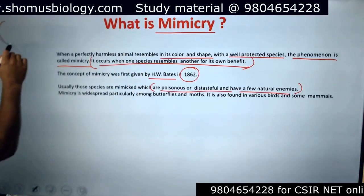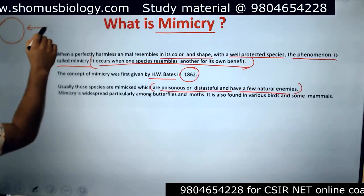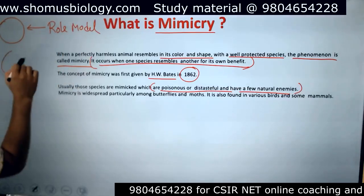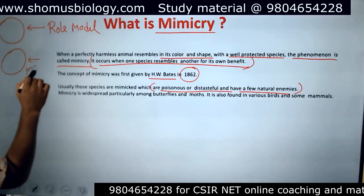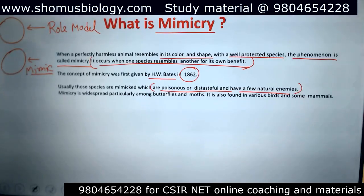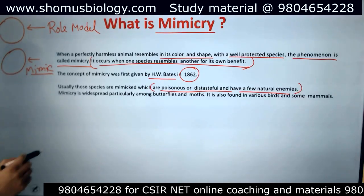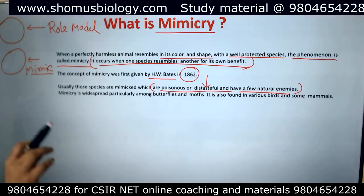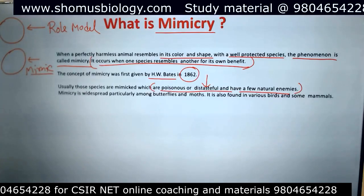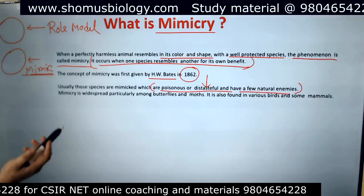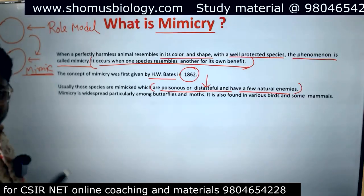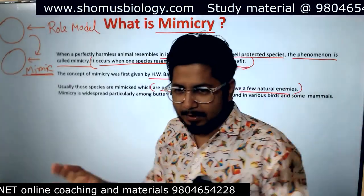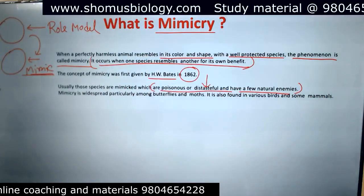In mimicry, there are two things: the person to be mimicked — the role model — and the person who will mimic. The role model is an organism that is either poisonous or distasteful; no one eats it or it has very few natural enemies. The mimic benefits because if you mimic that kind of organism, you are protected — nobody will eat you or kill you.